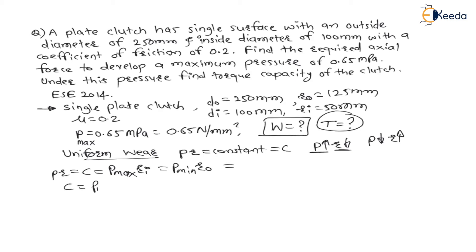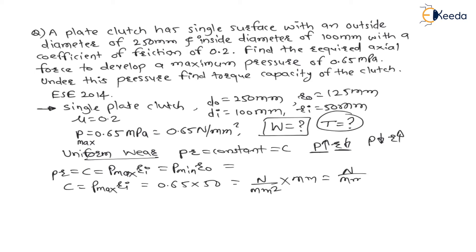Therefore, the constant C = maximum pressure × inside radius = 0.65 × 50 = 32.5 N/mm. Pressure is in N/mm² and radius is in mm, so C has units of N/mm.